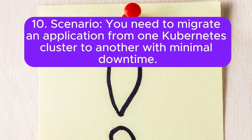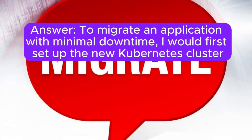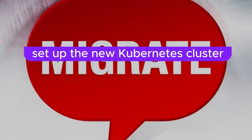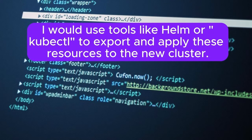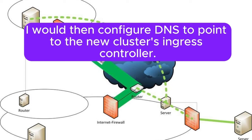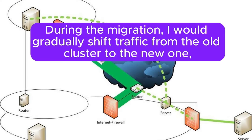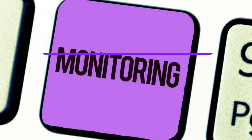Scenario 10: You need to migrate an application from one Kubernetes cluster to another with minimal downtime. How would you approach this migration? Answer: I would first set up the new Kubernetes cluster and replicate the application's configuration, including deployments, services, config maps, and secrets. I would use tools like Helm or kubectl to export and apply these resources to the new cluster. For data migration, I would ensure persistent storage is copied over using appropriate backup and restore tools. I would then configure DNS to point to the new cluster's ingress controller, and gradually shift traffic while monitoring for issues.